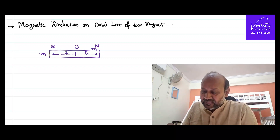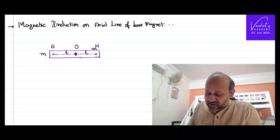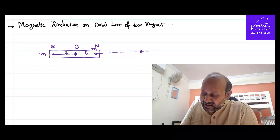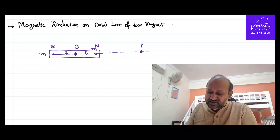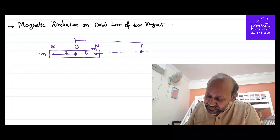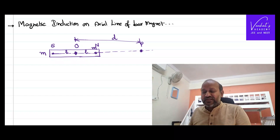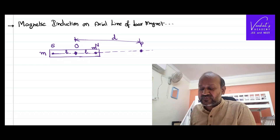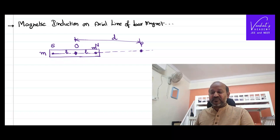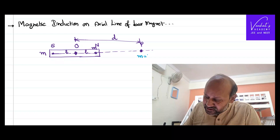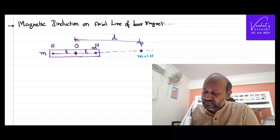A line passing through the magnetic center and along the poles of the magnet — through the north pole and south pole — is called the axial line. We consider a point P on the axial line at a distance d measured from the center of the magnet. On that point we want to find the magnetic induction. Magnetic induction is the force experienced by a unit north pole when placed in the field.